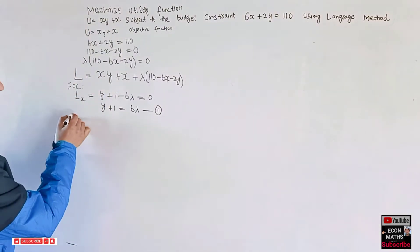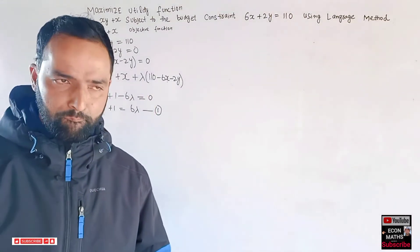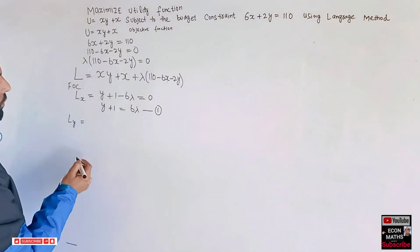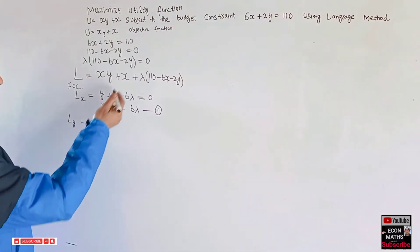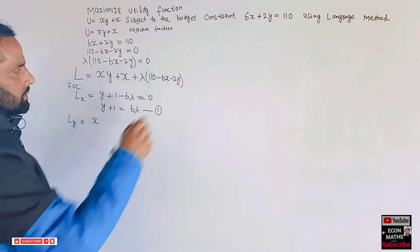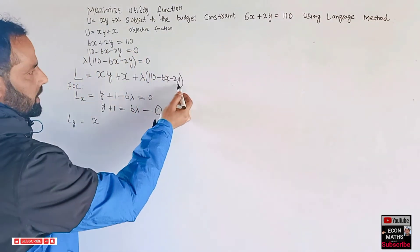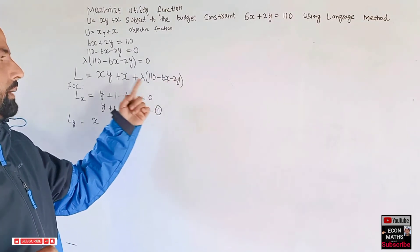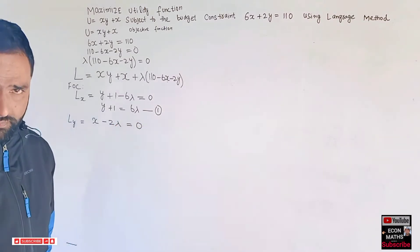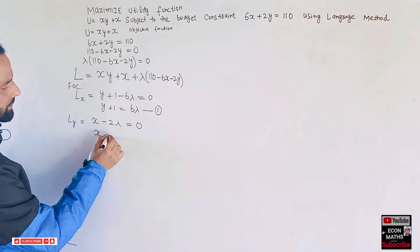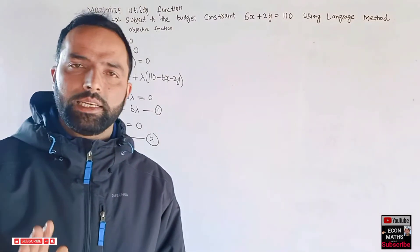Now partially differentiating with respect to y: the derivative of xy gives x, the second term has no y so its derivative is zero, and the derivative of the constraint term gives -2λ. So x - 2λ = 0, which gives x = 2λ. Let this be equation two.